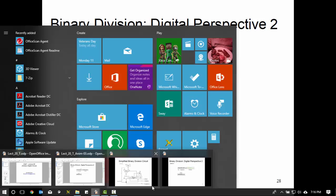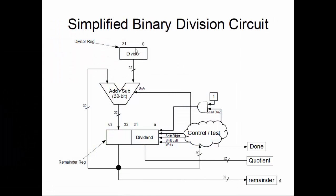Looking at the circuit: the divisor is a 32-bit fixed register that only needs a load operation. The remainder register is 64-bit with the dividend in the lower half. This register now needs both shift-right and shift-left capability to roll back and finalize the quotient bit depending on the sign of the upper half. The load/zero circuit inserts zero or one based on the result, and the subtractor result is loaded only into the upper half of the remainder register — it does not influence the lower half dividend at all.